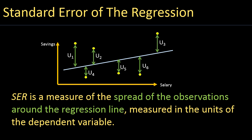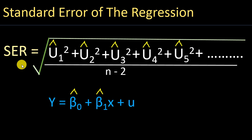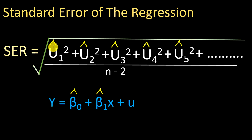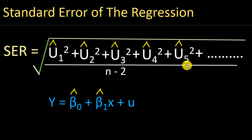Let's see how we can measure the standard error of regression. Since we normally will not know the population regression line, we use the error terms based on the sample regression line. We square every error term of the sample regression line, add all those together, and then divide by n minus 2, where n is the number of observations in the sample.